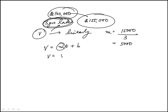So the equation is V = $5,000t + b, and then to find this we know at t equal to 0, V is $140,000, which means this b is $140,000.